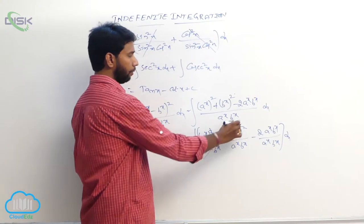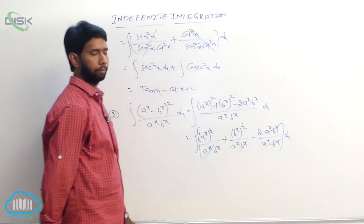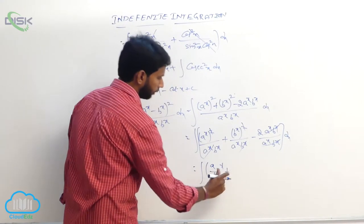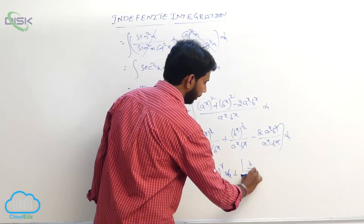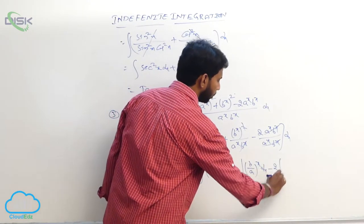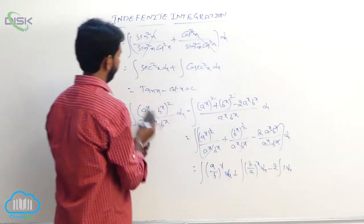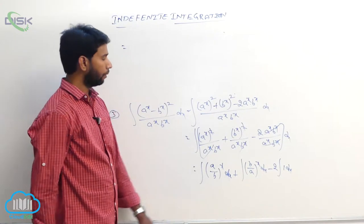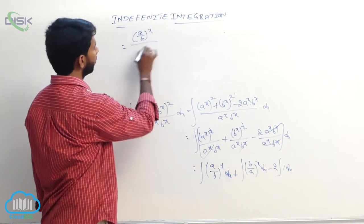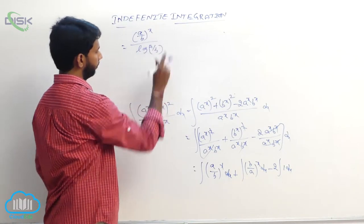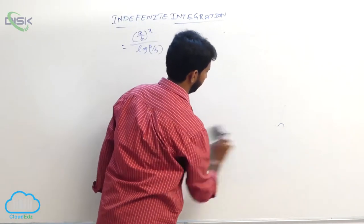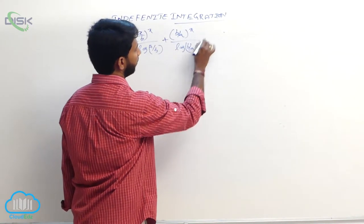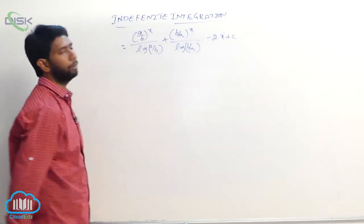After cancellation, the first term gives (a/b)ˣ, the second gives (b/a)ˣ, and the third is just 2. So the integral becomes: integral of (a/b)ˣ dx plus integral of (b/a)ˣ dx minus 2 integral of 1 dx. Using the formula for aˣ, the answer is (a/b)ˣ/log(a/b) plus (b/a)ˣ/log(b/a) minus 2x plus constant.